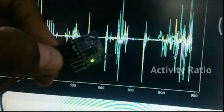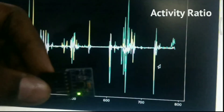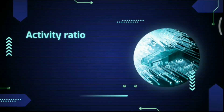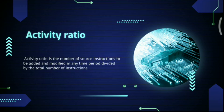Activity Ratio is the number of source instructions to be added and modified in any time period, divided by the total number of instructions.